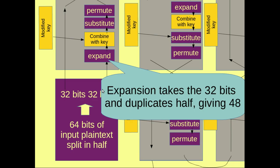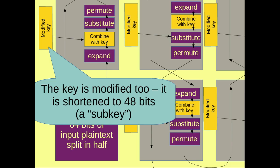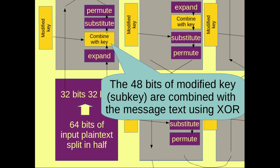What we've got here, starting off we've got an expansion which takes the 32 bits and duplicates half of them which gives you 48 bits. The key is modified too so you get a subset of the key which is 48 bits. And these two are combined using XOR. So the 48 bits of the message text are combined with the 48 bits of the key text using XOR.